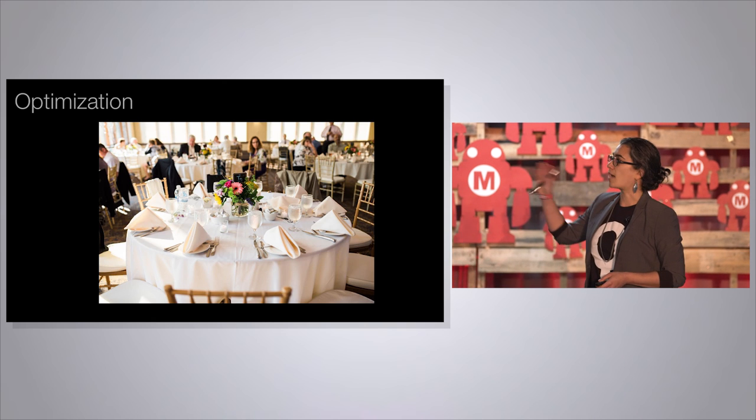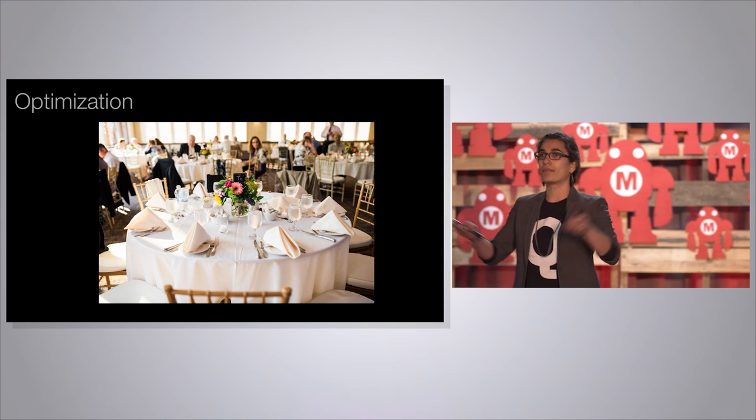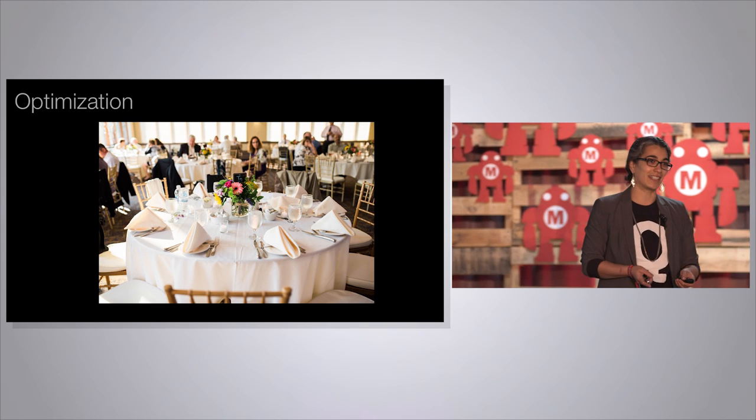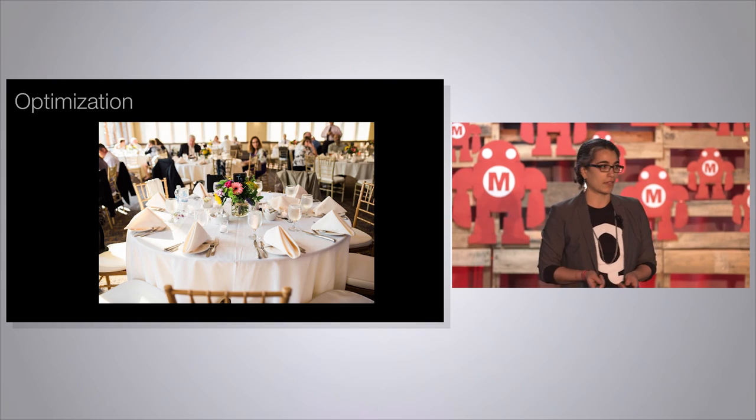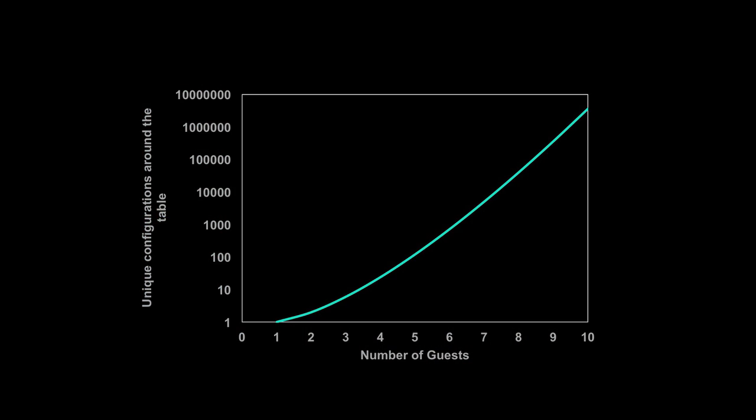The first example is optimization — finding the best solution among many possible solutions. Here's a picture of a table at my wedding with ten people. How many different ways are there to configure ten people around a table? The answer is ten factorial: 3.6 million. Every time you add one person, the number of possible configurations grows exponentially. We can solve small versions of this problem on classical machines, but we don't solve big versions very well at all.